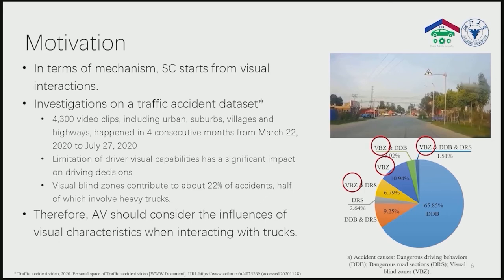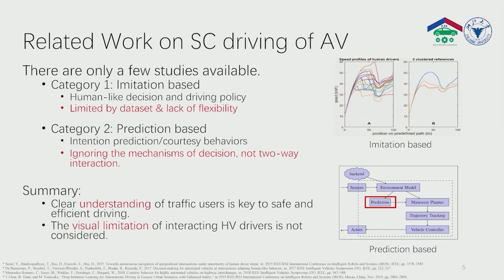As can be seen from the pie graph, visual blind zones contribute to about 22% of accidents, and half of which involve heavy trucks. Therefore, AVs should consider inferences of visual characteristics when interacting with trucks.